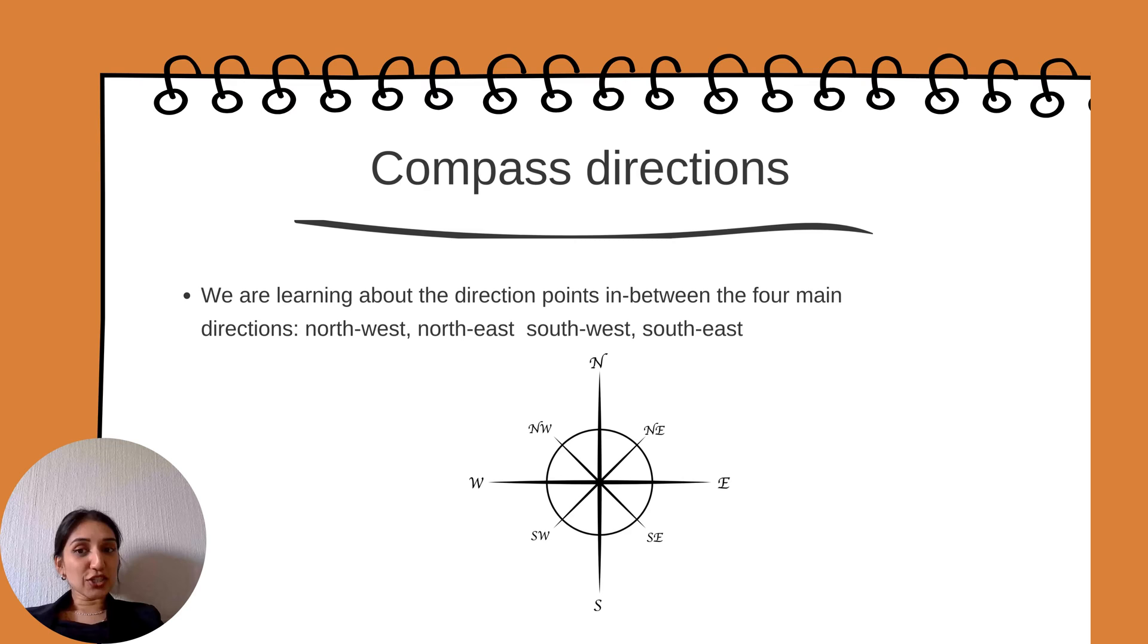We are learning about the direction points in between the four main directions: northwest, northeast, southwest, southeast. If you look in between the four main points you would find northeast, southeast, southwest and northwest.